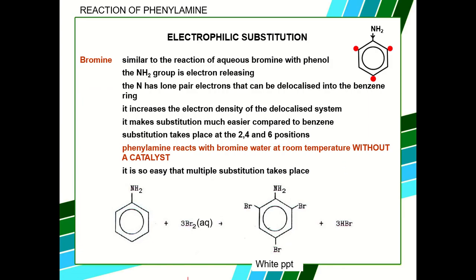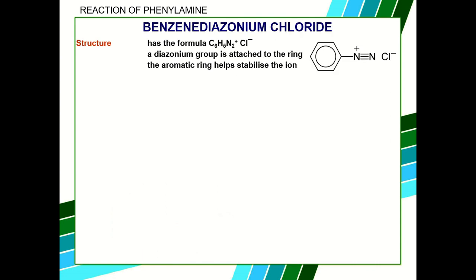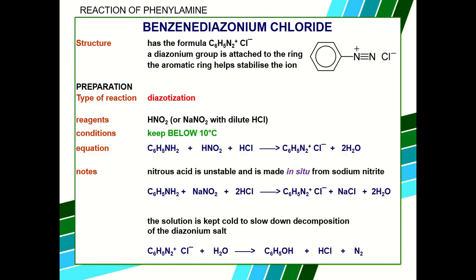That is the first reaction of phenylamine. The second reaction is very interesting because a very unique ion is formed — the benzene diazonium ion. This is the formula. The benzene diazonium ion, and if there is a chloride ion to neutralize this cation, the compound is called benzene diazonium chloride.